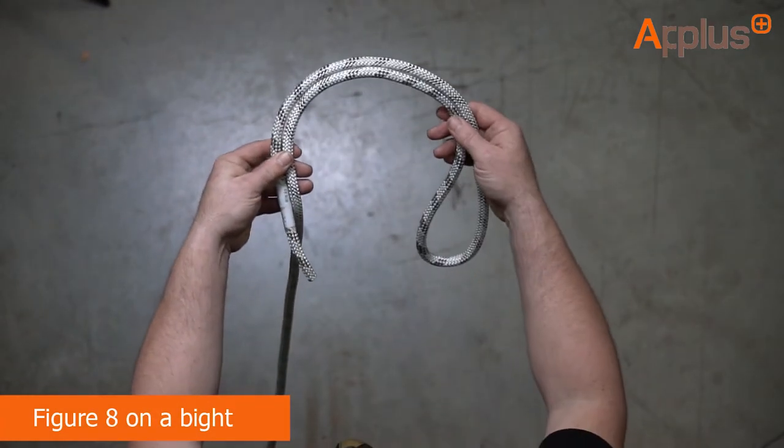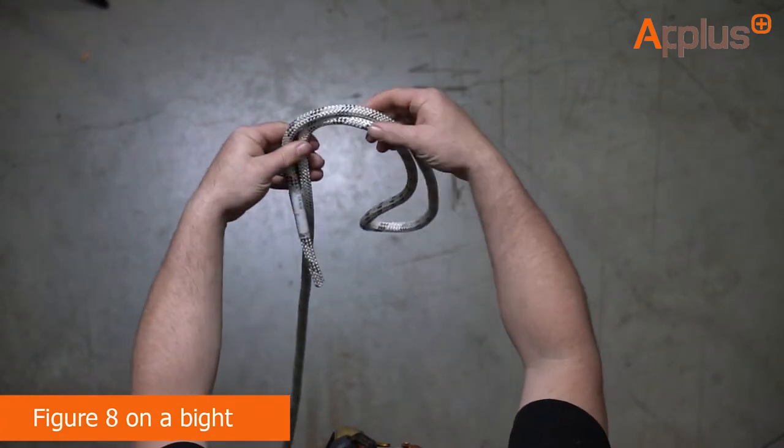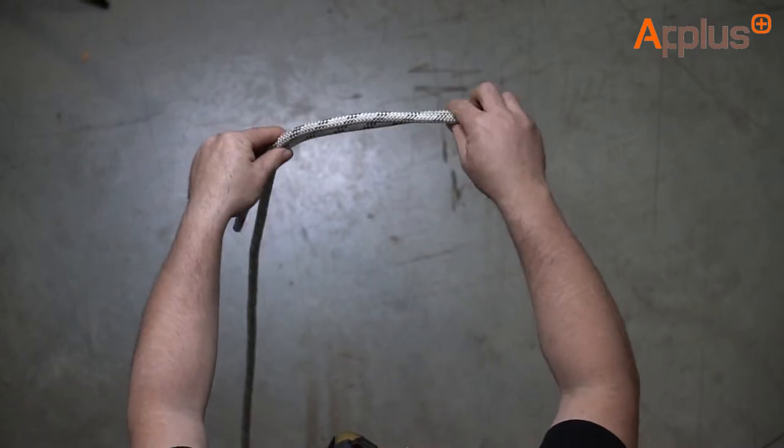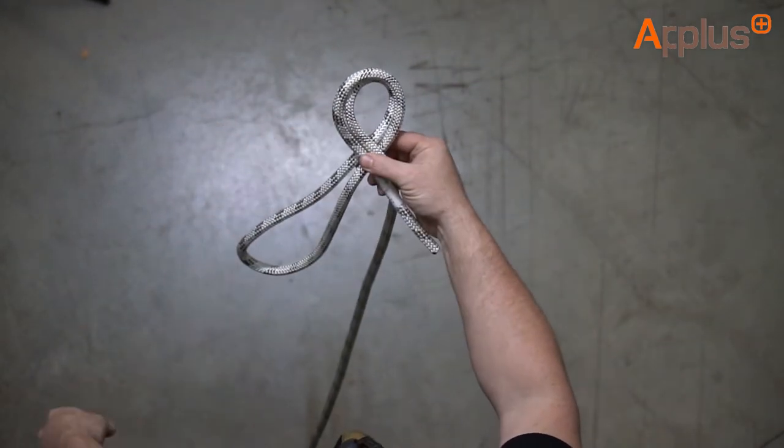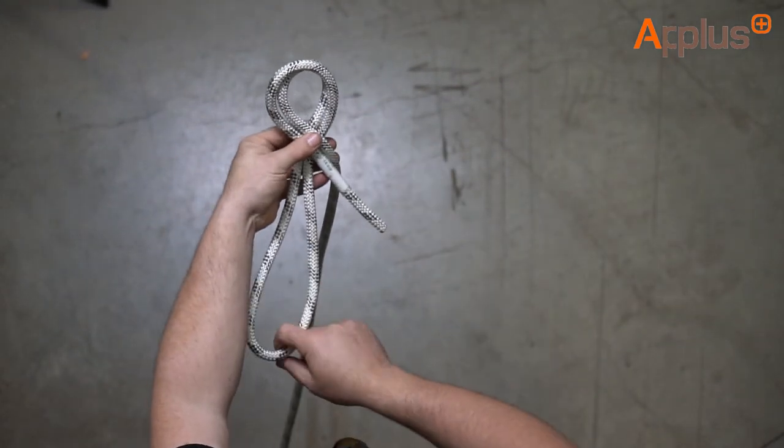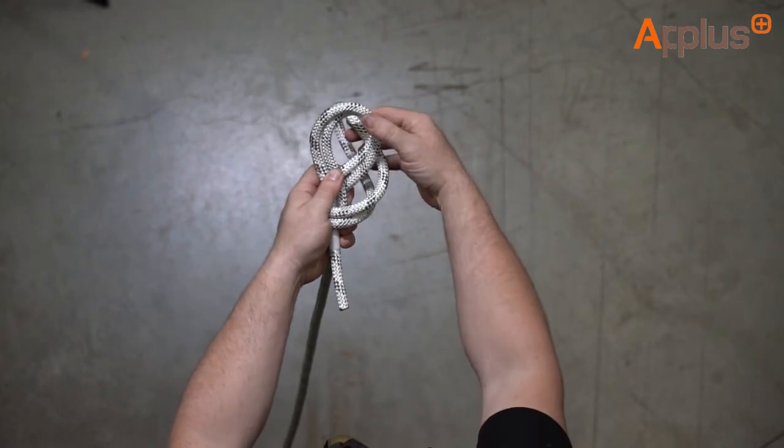This is a figure of eight on a bight. You start with the tail on the left, then the bight goes to the right, around to the left, and hold the twist with your left hand, around to the right, and through the rear.